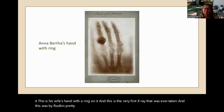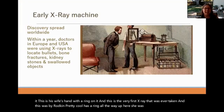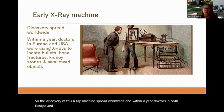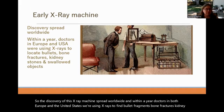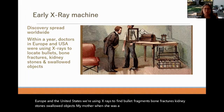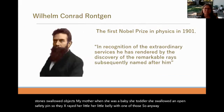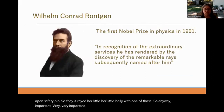The discovery of the x-ray spread worldwide. Within a year, doctors in Europe and the United States were using x-rays to find bullet fragments, bone fractures, kidney stones, and swallowed objects. Röntgen received the very first Nobel Prize in Physics in 1901. His nomination stated: 'In recognition of the extraordinary services he has rendered by the discovery of the remarkable rays subsequently named after him.' Though the name x-ray stuck rather than being named after him.